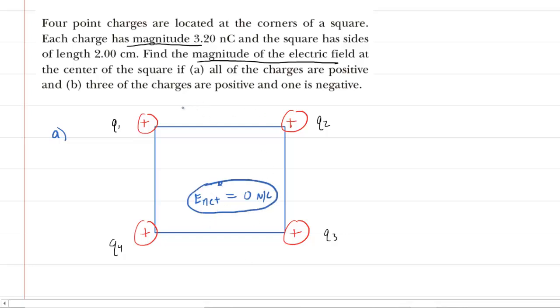Now part B, of course, is much more challenging because although three of the charges are positive, one of them is going to be negative. So let's take a look at that.